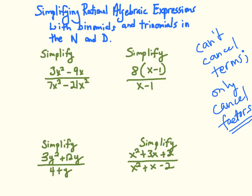Let's go to some more complicated ones now. On this one, I have 3x squared minus 9x over 7x squared minus 21x squared. You'll notice I've said you can't cancel terms — we just can't start canceling common factors that we see, because this is not in factored form because of these subtraction signs.